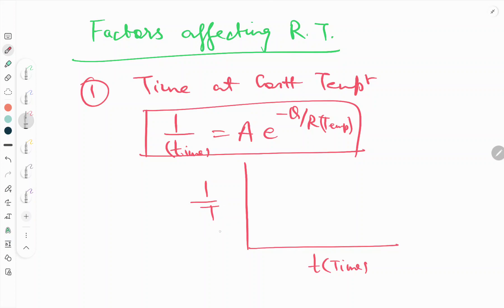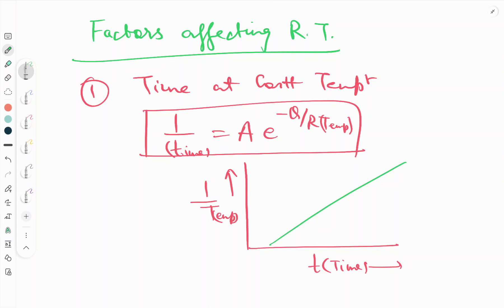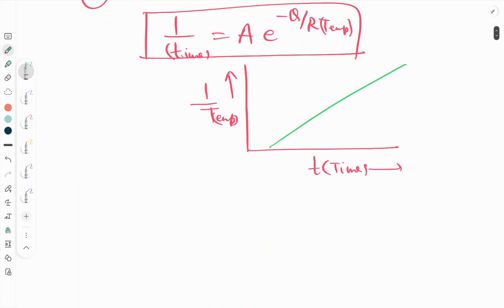According to this equation, if you look at the graph of 1/T versus time, the trend shows that as time increases, the temperature decreases, or equivalently, 1/T (the reciprocal of temperature) will increase.